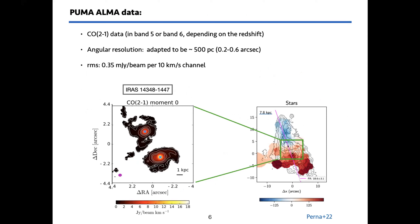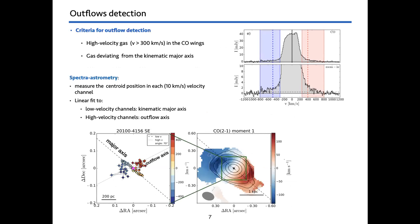Here we have an example of one of our targets on the left showing the CO(2-1) integrated emission around the two nuclei of the system. As a reference on the right is a map of the stellar emission which is much more extended — we can see the region we are probing with the CO(2-1) observation is really concentrated and close to the nuclear region, only a few kiloparsec in scale. Our goal is to identify outflows in the molecular gas, and to do this we look for high velocity gas with velocities above 300 km/s, therefore not related to rotation but to the outflow.